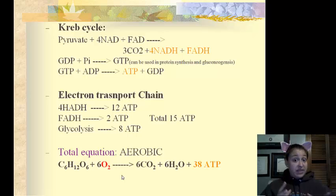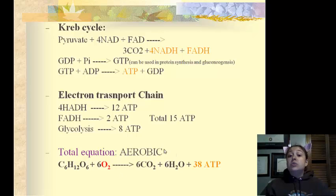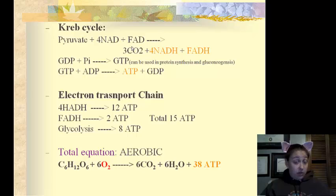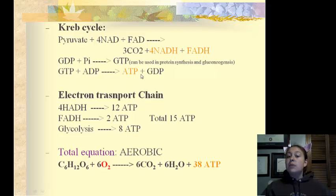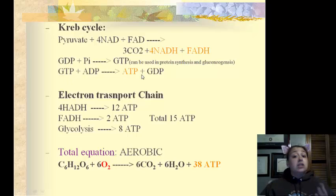During the Krebs cycle, pyruvic acid and some other molecules are used to create carbon, which can be used in carbon fixation or to make macromolecules, and two other high-energy molecules — NADH and FADH. We can also get some ATP, but we have to go through a middleman. This middleman is GTP, or guanosine triphosphate.